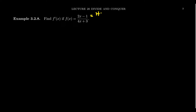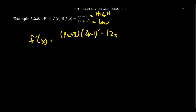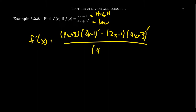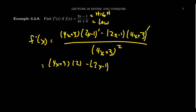The 'high' function is 2x − 1 and the 'low' function is 4x + 3. Using the poem, the derivative f prime of x equals low d high minus high d low, square the bottom here we go. The derivative of 2x − 1 is 2, and the derivative of 4x + 3 is 4 — the derivative of a linear function is just its slope. This all sits above (4x + 3) squared.